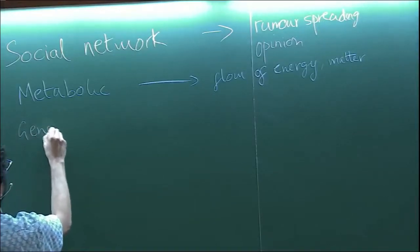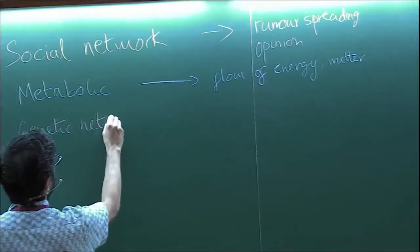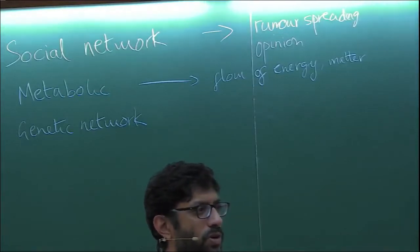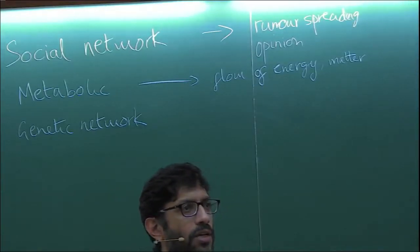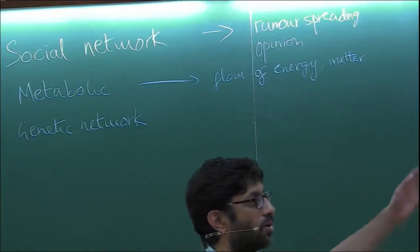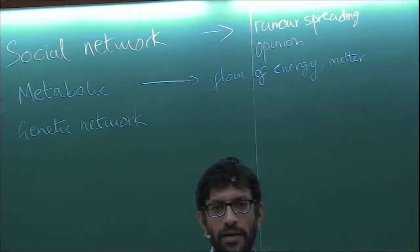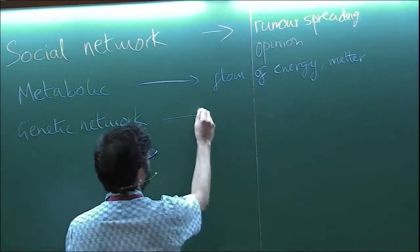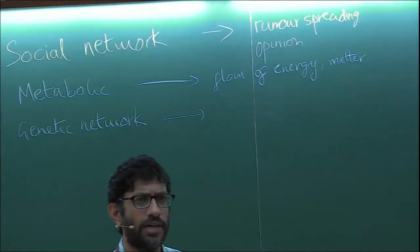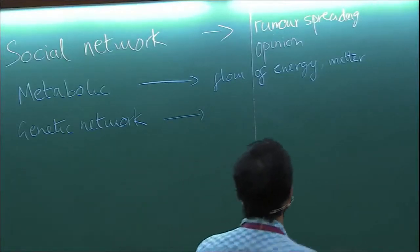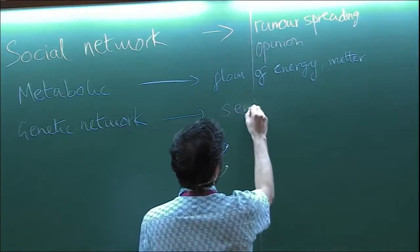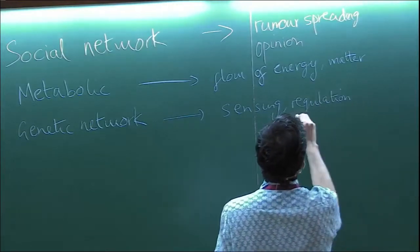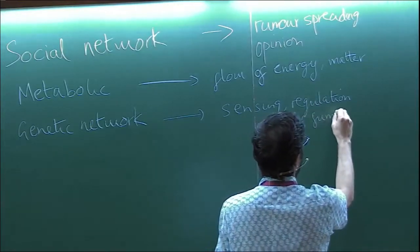As another example, genetic networks. In our cells, or in a bacterium, there are genes that produce proteins which do various functions. But many proteins that are produced, their real function is to turn on or turn off some other gene. There can be a whole complicated network of genes which are turning each other on and off. These systems are used for sensing the environment and responding to it — regulation of function — so there's a lot of dynamics going on.